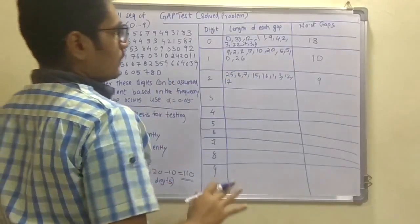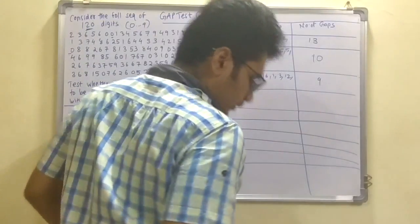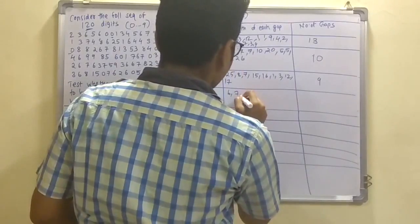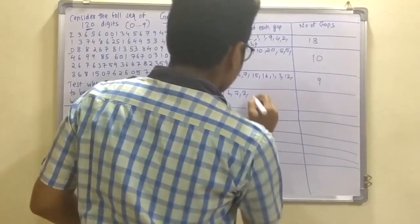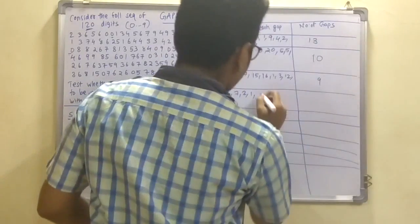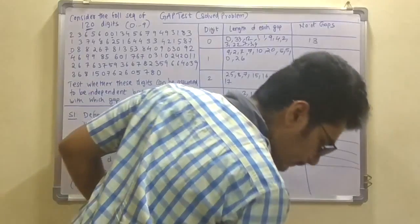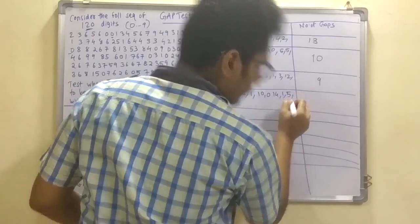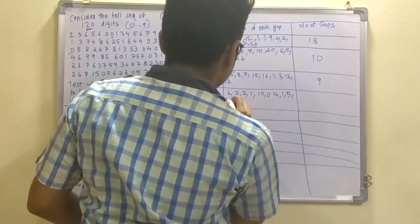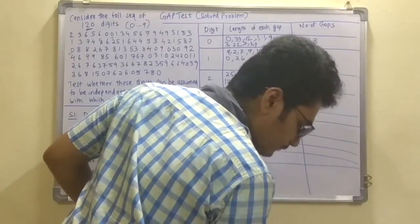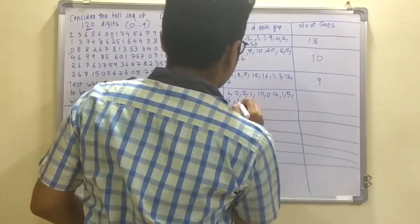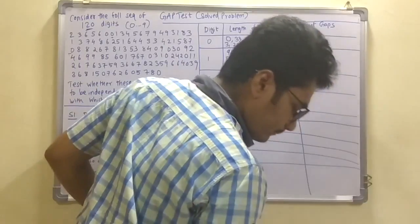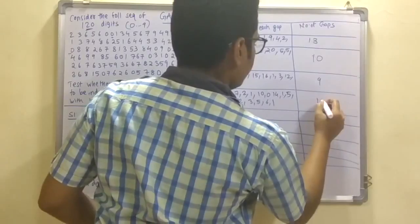For digit 3, the gap lengths are: 6, 7, 2, 1, 10, 0, 14, 1, 5, 16, 15, 12, 3, 5, 6, 1. The total number of gaps for digit 3 is 15.